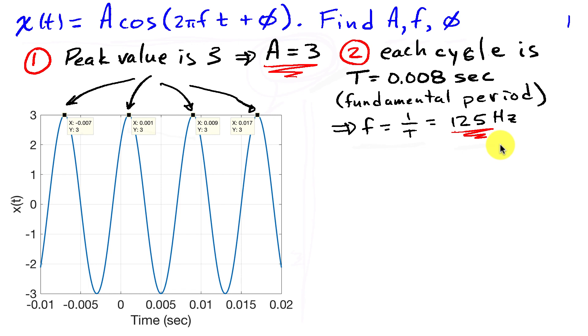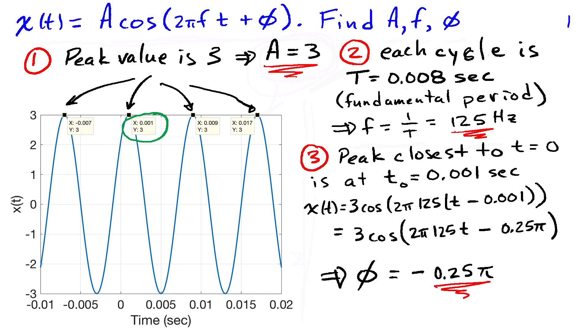So f, then, is 125. Now that we've found the frequency, we can also find the phase, and the way we're going to do this is by identifying how much this cosine has been shifted relative to a cosine with zero phase. So if the phase were zero, then this positive peak would be located at the origin, or at T equals zero. So we see that instead, this positive peak is located at a time T naught equals 1 millisecond, or 0.001 second.